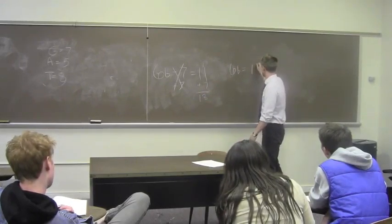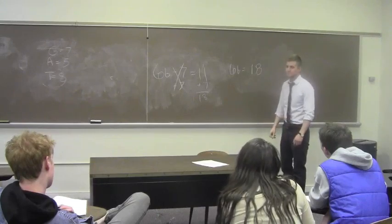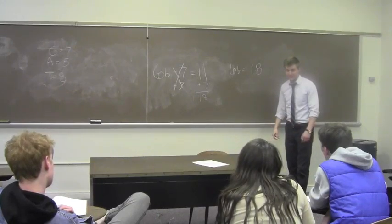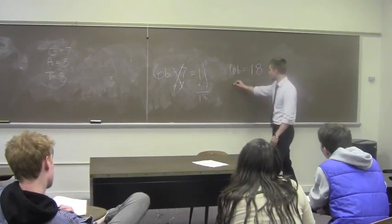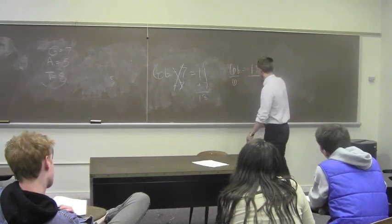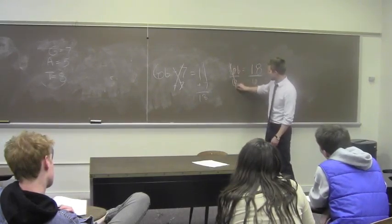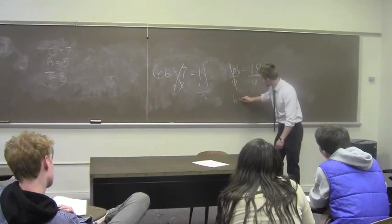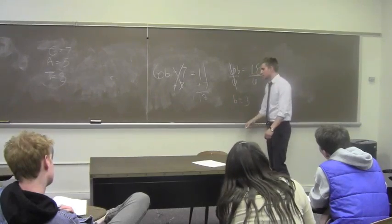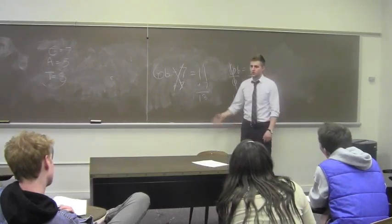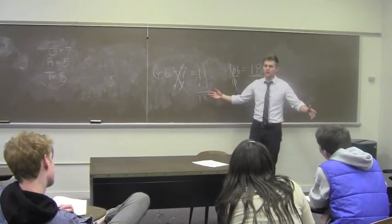Six B equals 18. Now what do we do? Divide by six. And what is 18 divided by six? Three. B equals three. You're all rock stars. You all just won a bunch of points. Great job.